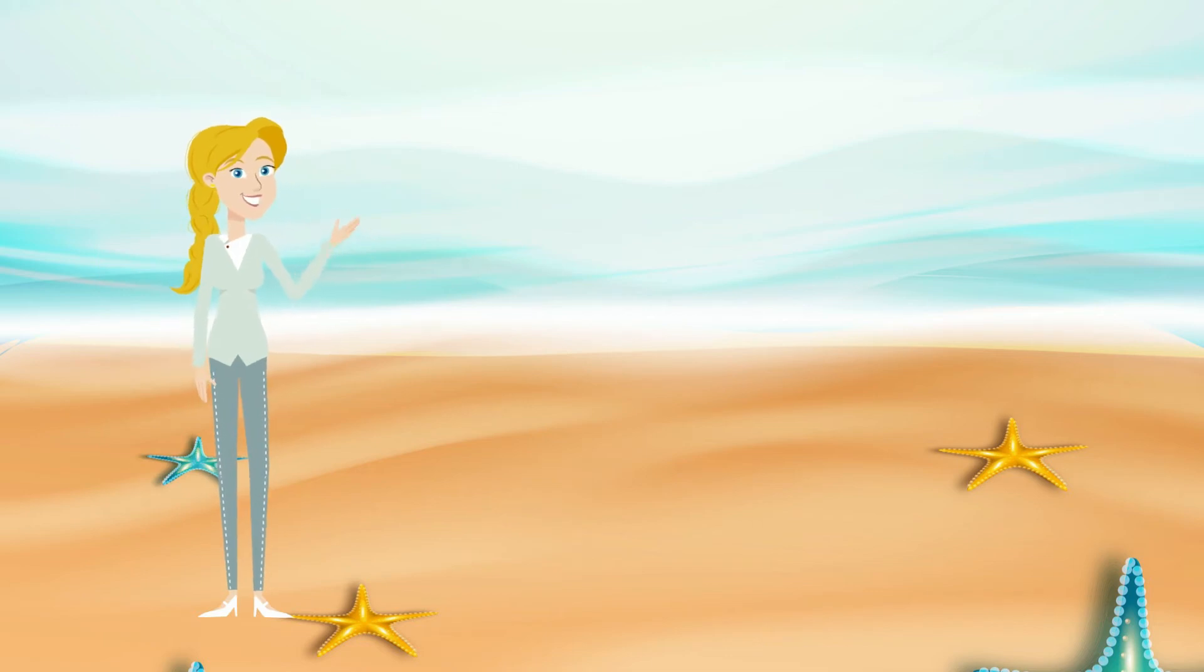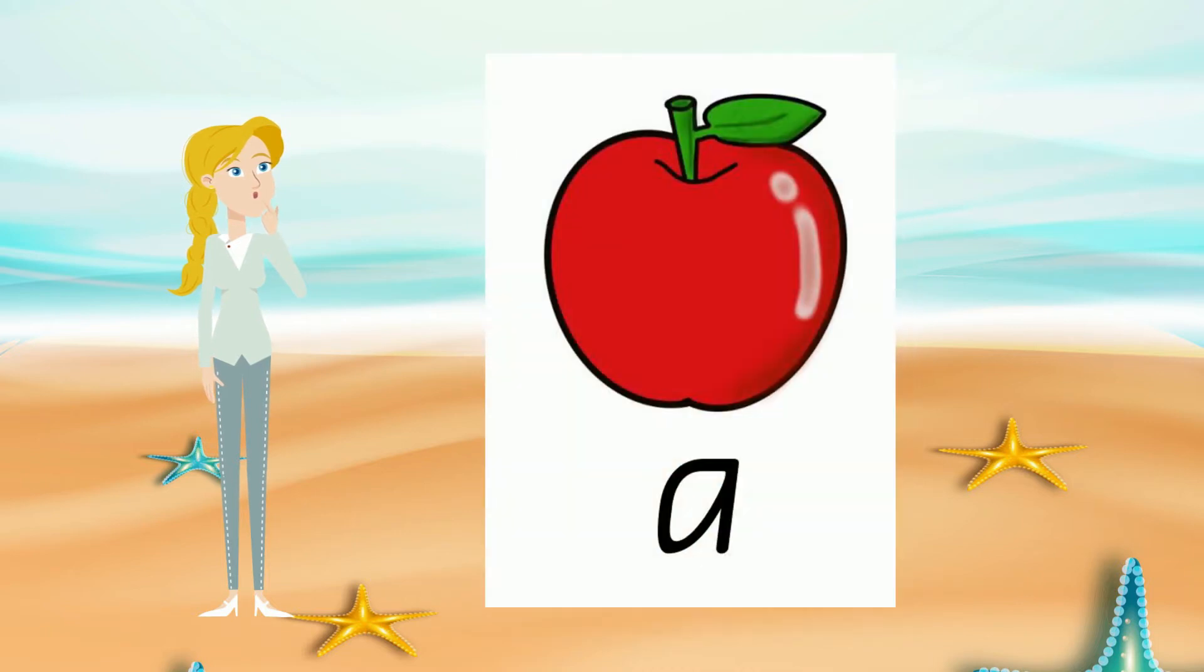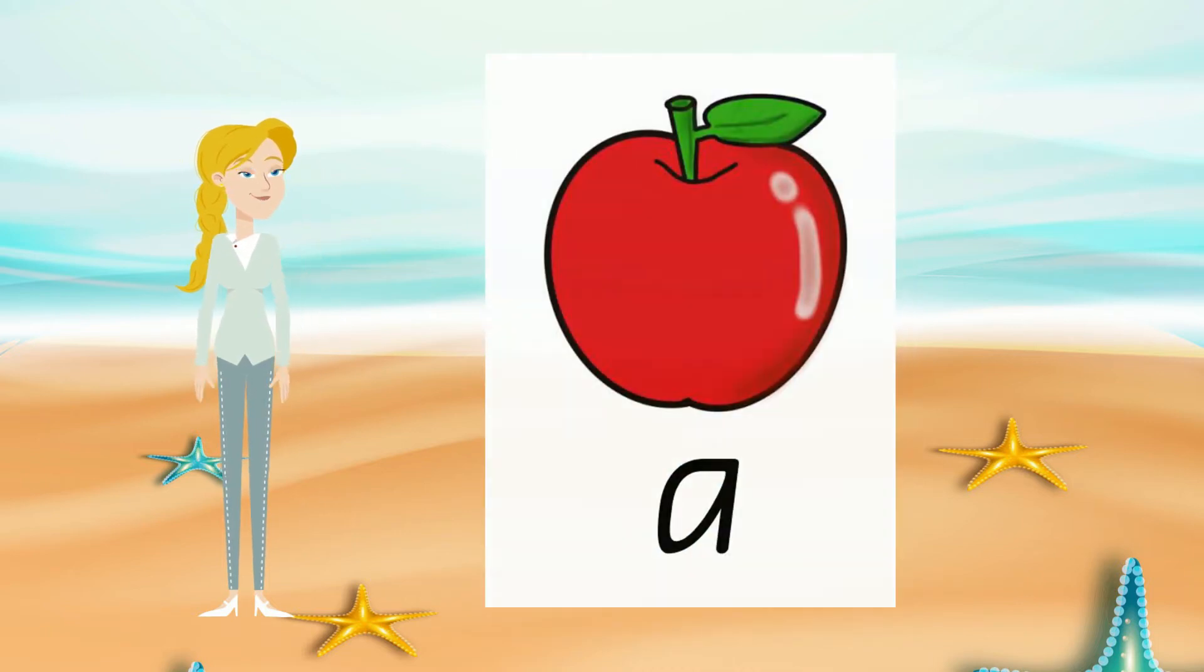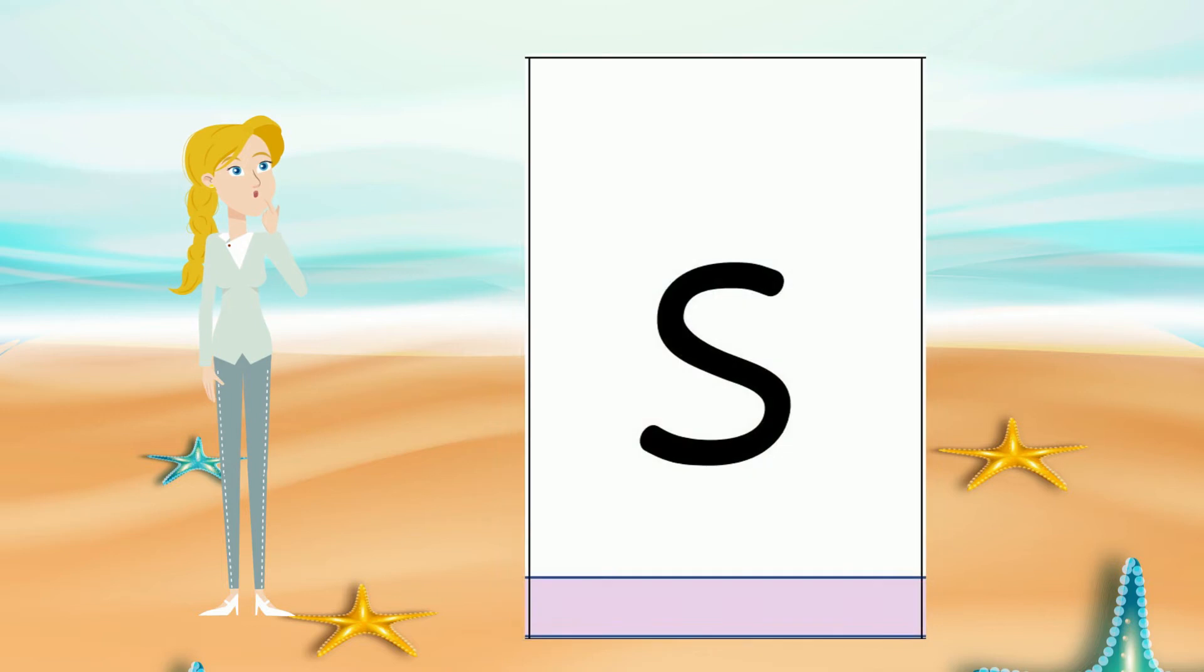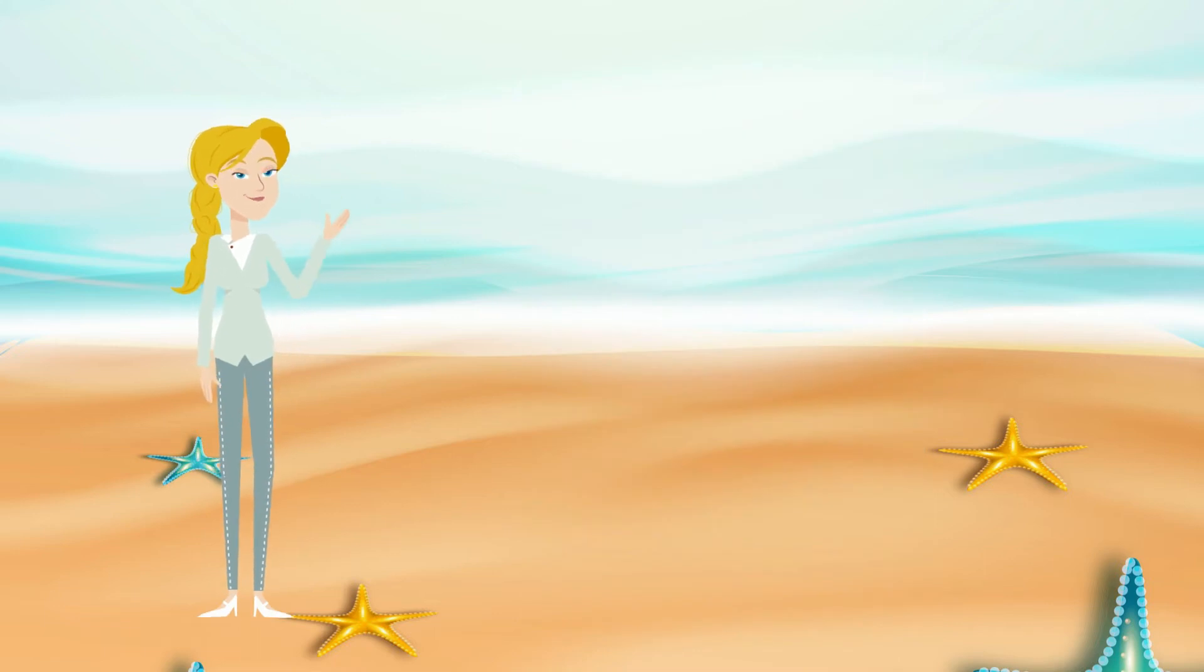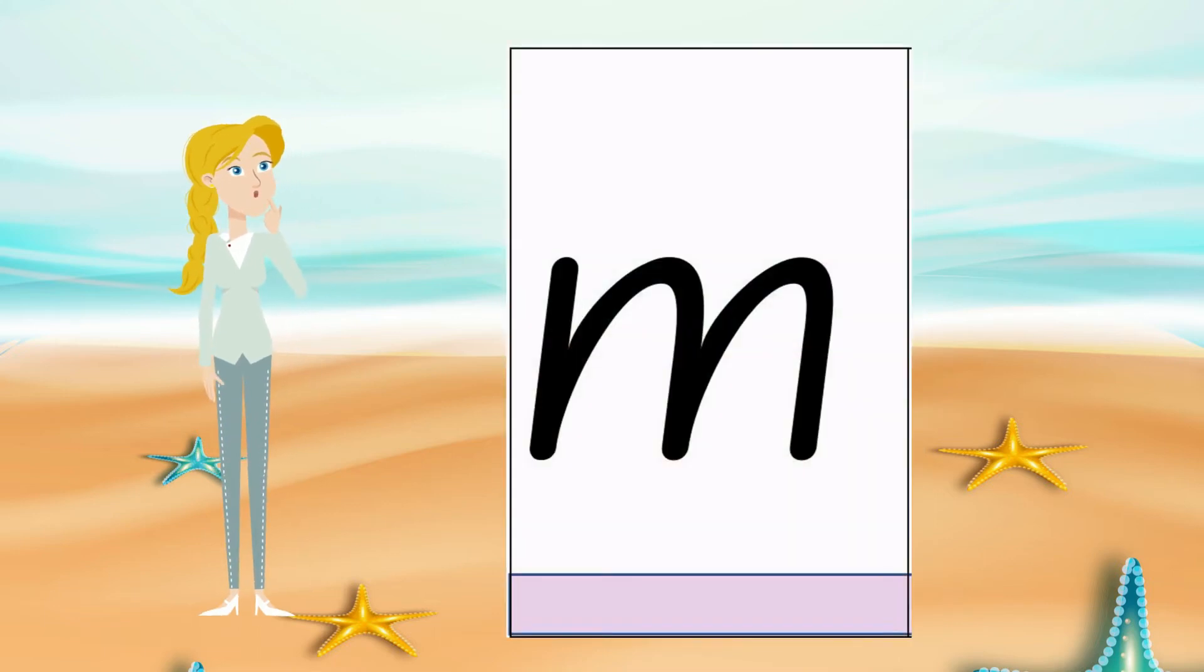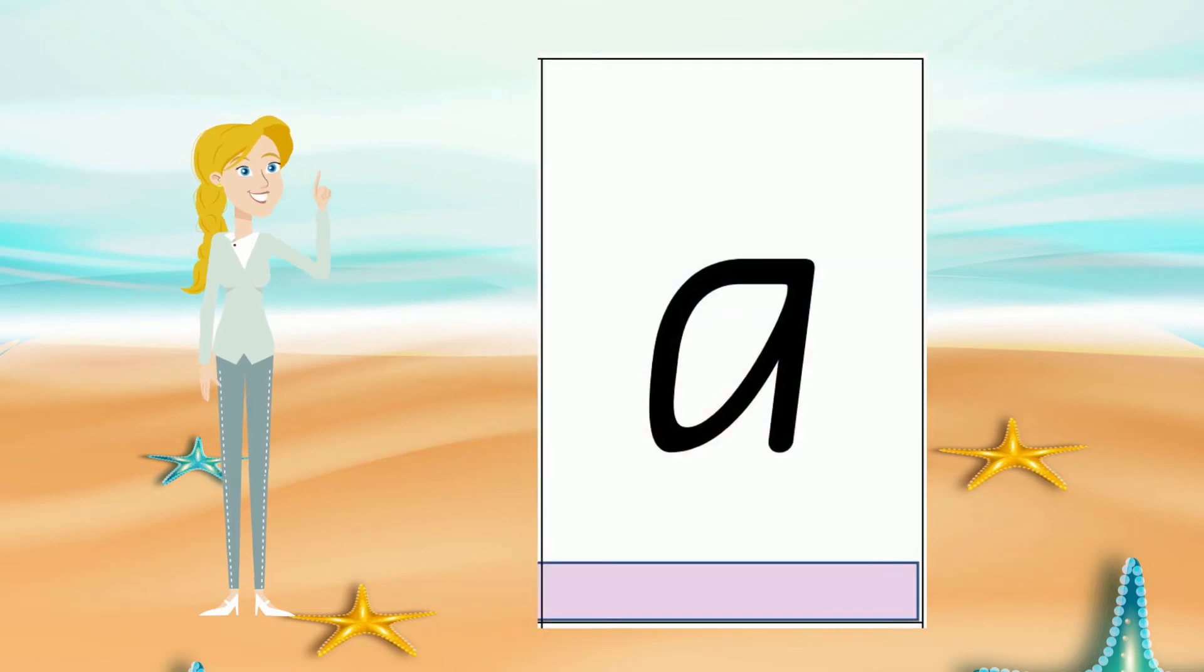Let's say the sounds on our sound wall. M, S, A. Say the phonemes for each letter: M, S, A. Say the letter names: M, S, A.